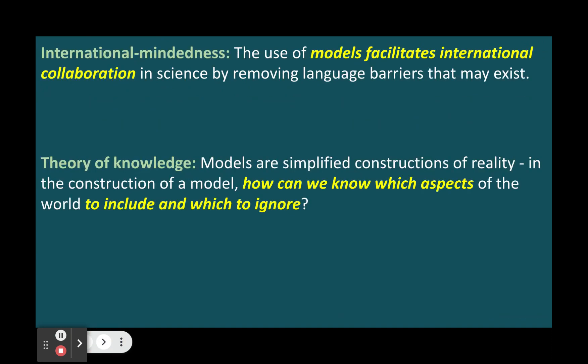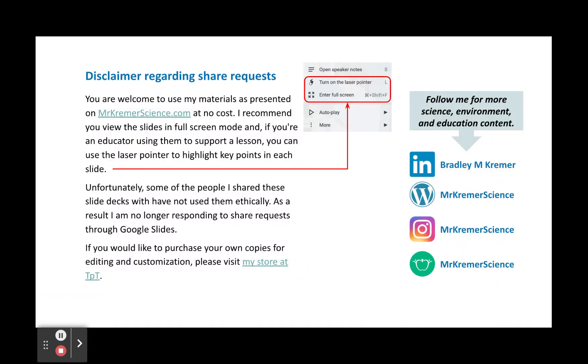In conclusion, systems and models are essential tools for studying environmental systems and societies. They help us describe, explain, predict, and manage complex phenomena that involve multiple factors and interactions. However, we also need to be aware of their limitations and uncertainties and use them with caution and critical thinking. Thank you for your attention. I hope you have learned a bit more about IBESS topic 1.2, Systems and Models. This is a fundamental set of ideas that you will encounter throughout the ESS course.